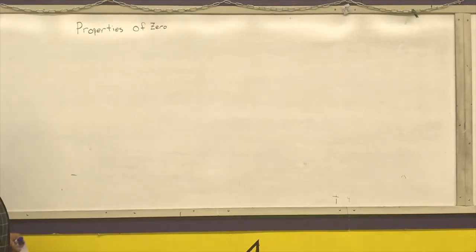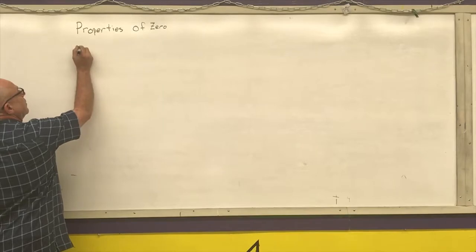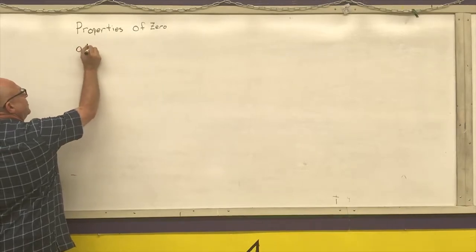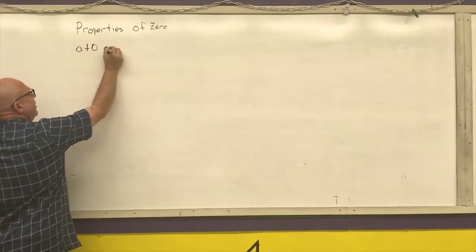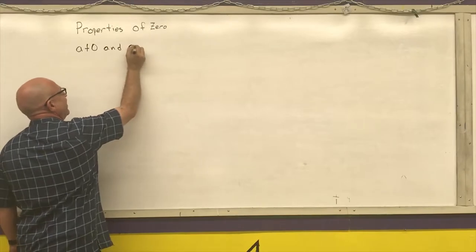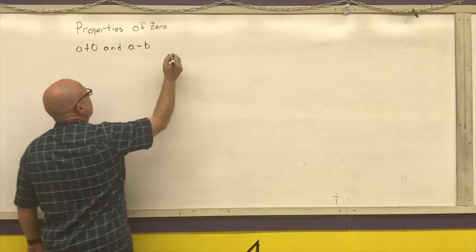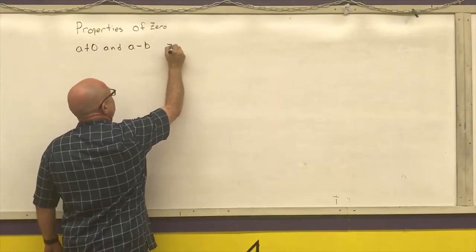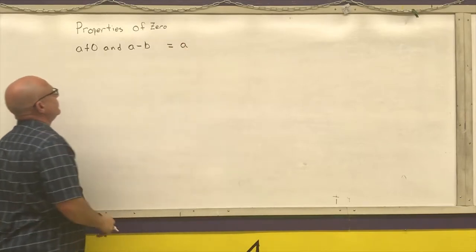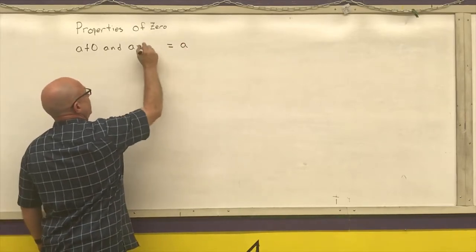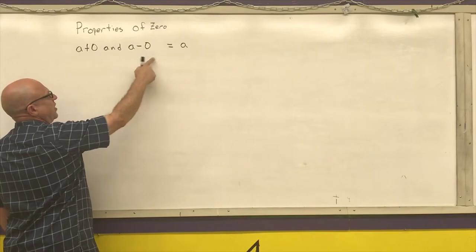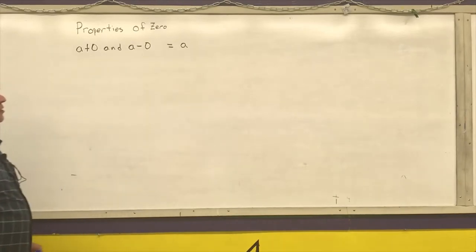So, properties of 0. A plus 0, and A minus 0, equal A. Oops, that's supposed to be a 0 here. If I add or subtract 0, I just get back to the original number.